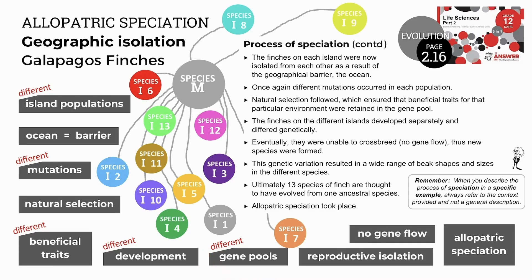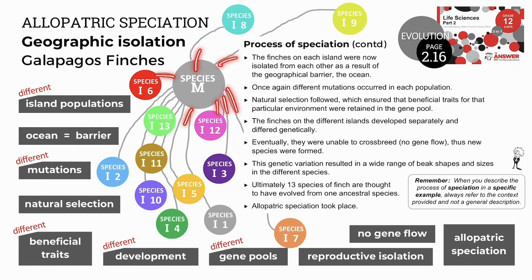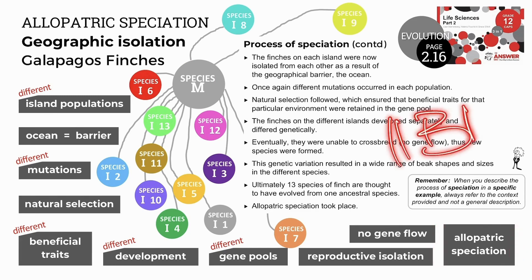They became so different that the populations became reproductively isolated — in other words, they couldn't interbreed and there was no gene flow. This theory suggests that the 13 species on these islands all originated from the mainland ancestor species. This illustrates allopatric speciation, which always involves a barrier.